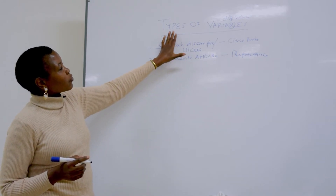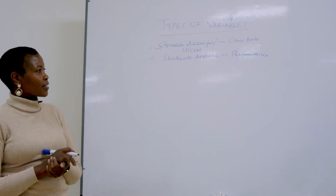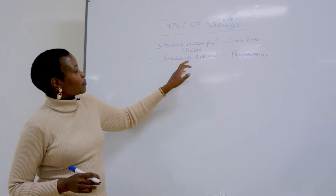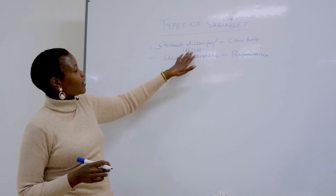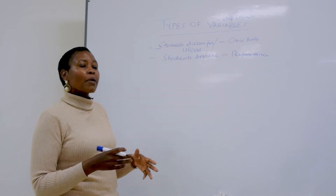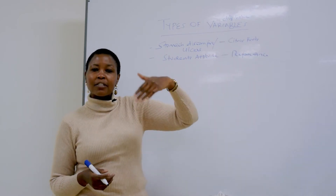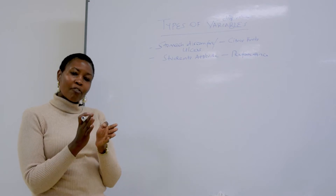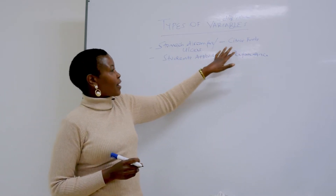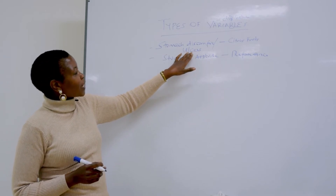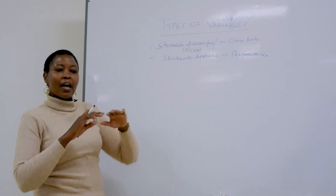We are going to talk about the various types of variables that social science researchers measure in the course of their research study. I have two examples here. There could be some of us who suffer from stomach discomfort or ulcers, and these ulcers probably become more painful when they eat citrus fruits, milk, or vegetables. When they have not eaten the vegetable or the fruit, there will be no discomfort. But immediately they eat the fruit, there is discomfort or they feel the pain. It means these fruits have brought about a change in our health.